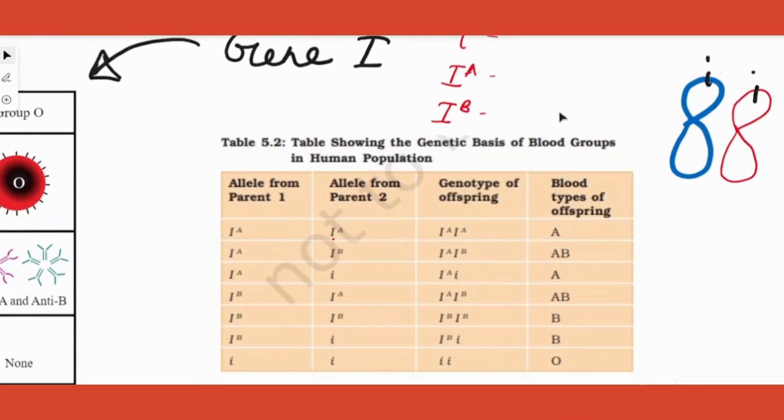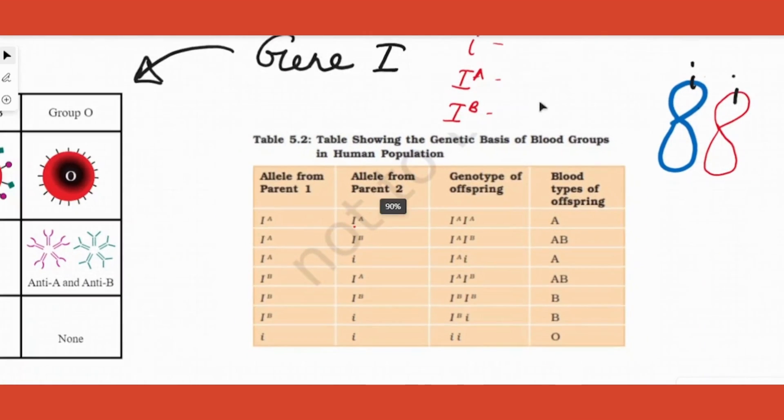Now let us say I have this allele. This allele is a nil allele, meaning it will not produce any antigen on the surface of RBC. Therefore, no antigen on the surface gives O blood group. There are a lot of applicatory questions from this chapter, from this particular topic, which I will be doing in the next video. Thank you.